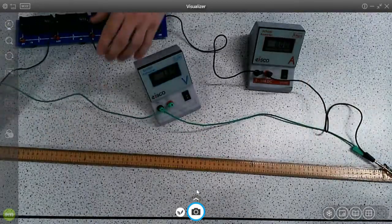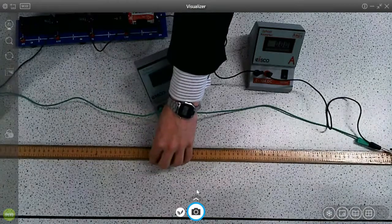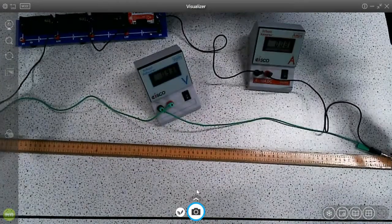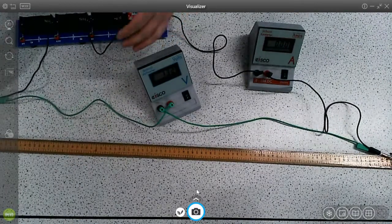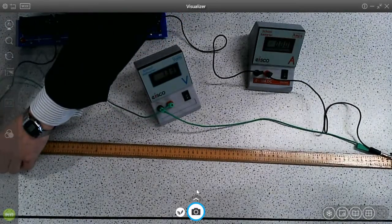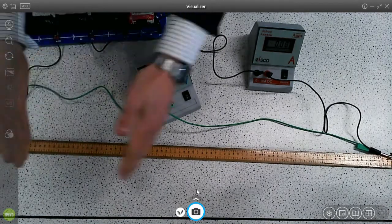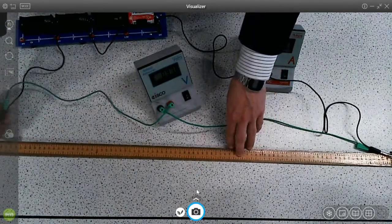And we start measuring from the maximum length. So in this case, 0.98 meters, and then we are going to unplug it. We can write down our results, and then we can do our new length, and we're going to get shorter each time, so shorter by 10 centimeters.